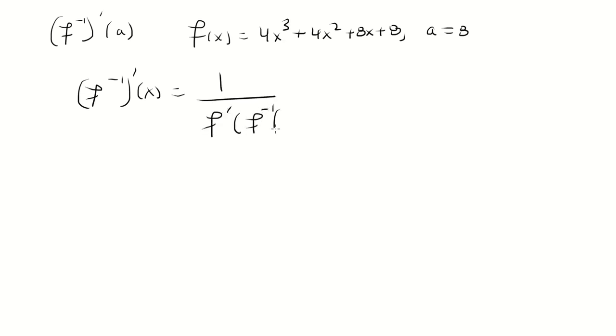Find the derivative of f inverse of a where f of x equals 4x cubed plus 4x squared plus 8x plus 8. Okay, so the formula is going to be 1 over f prime of f inverse of x. We're going to need the inverse and f prime.